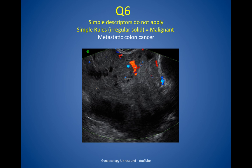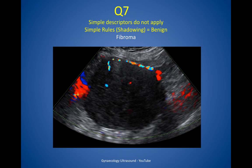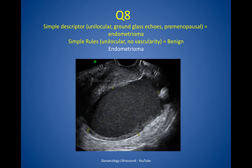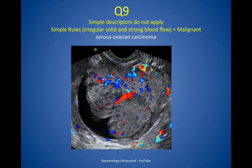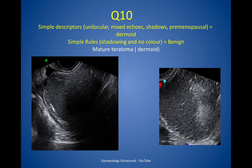Question 6: simple descriptors do not apply but on simple rules it's irregular and solid — malignant — and this was metastatic colon cancer. Question 7: simple descriptors do not apply but on simple rules there was shadowing — a benign feature — and this was a fibroma. Question 8: on simple descriptors this is unilocular with ground glass echogenicity in a pre-menopausal woman — an endometrioma. On simple rules it was unilocular with no vascularity, so benign — this was an endometrioma. Question 9: simple descriptors do not apply but on simple rules it's an irregular solid lesion with strong blood flow — malignant — this was a serous ovarian carcinoma. Question 10: on simple descriptors this is a unilocular lesion with mixed echogenicity and shadowing in a pre-menopausal woman — a dermoid. On simple rules there's shadowing and no colour flow, so it looks benign — this was a mature teratoma or dermoid.